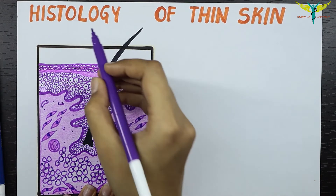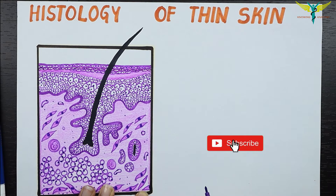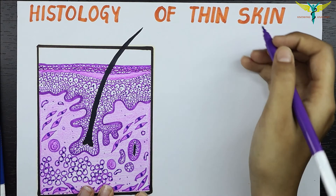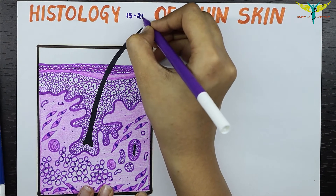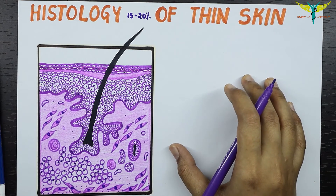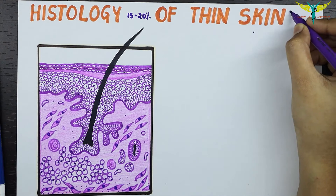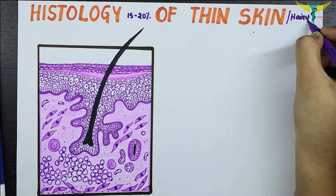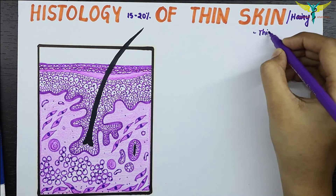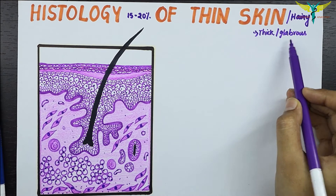In this video, let's learn about the histology of the thin skin. The skin forms the external covering of the body and is the largest organ, constituting about 15 to 20 percent of the total body mass. There are two types of skin: one is the thin or hairy skin, and another type is the thick or glabrous skin.